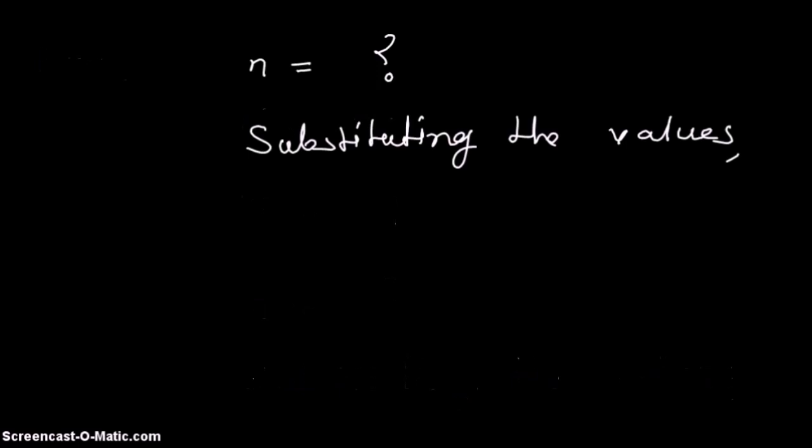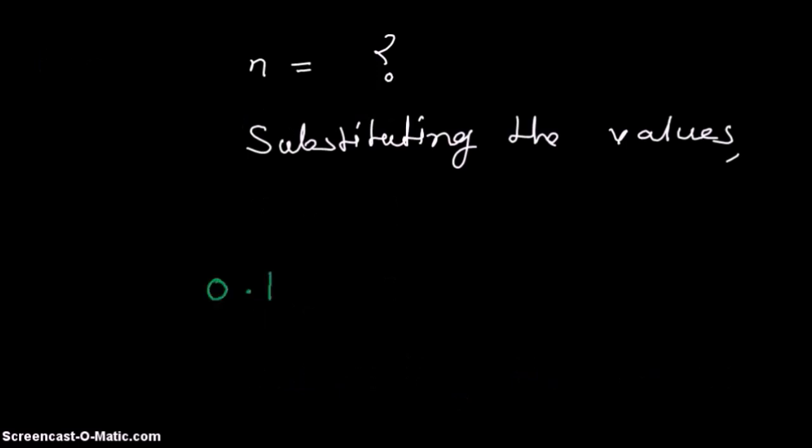Substitute the values: M is 0.1, V is 1 liter, and N is to be found out. In the first stage, we have to find the number of moles of hydrochloric acid to be used. Substituting the values and rearranging the equation for the value of number of moles...